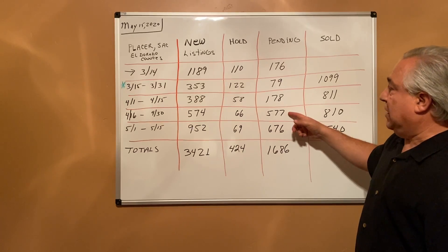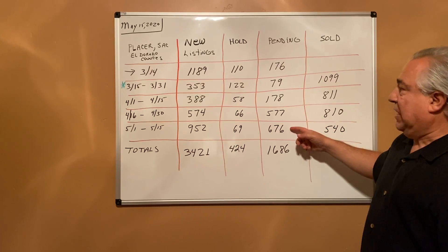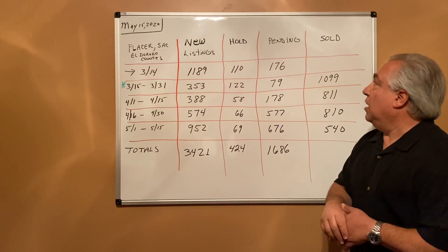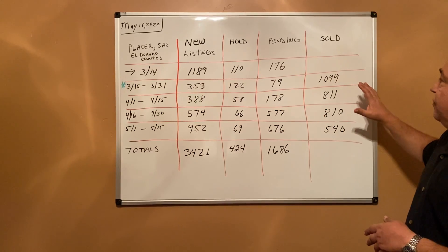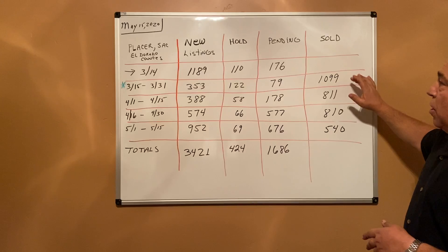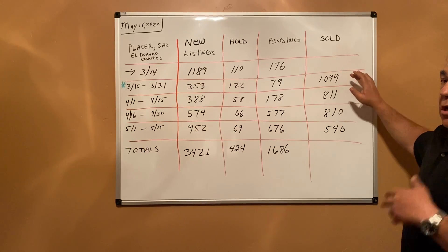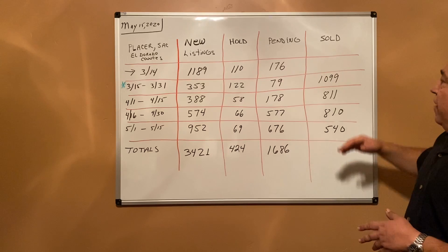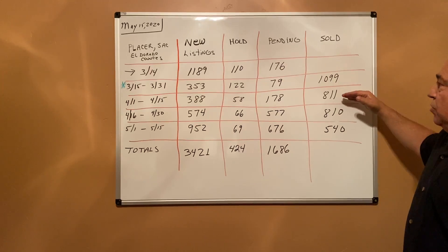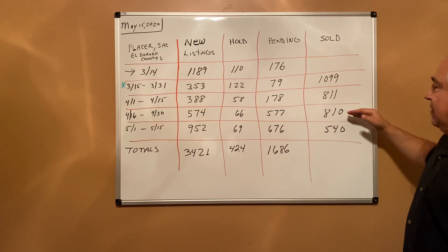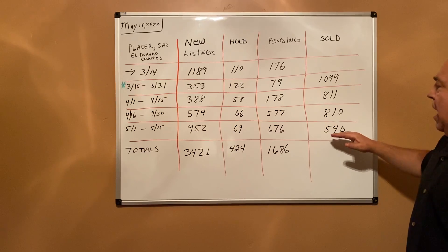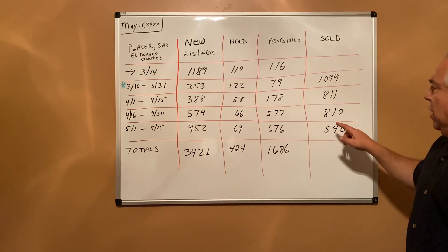As far as actual sales, in the first part of March we had just over 1,000 homes that actually closed. Then for the first two weeks in April it was 811, and then 810. The first two weeks of May it dropped to 540.